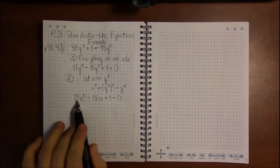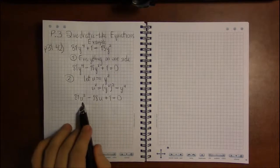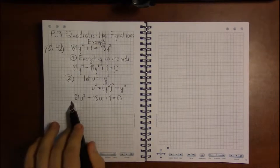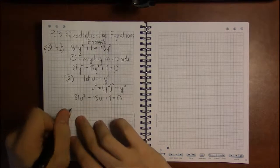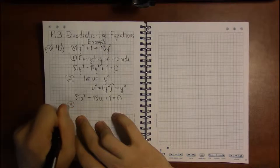Now I look and see, I've got numbers, I've got u squared, I've got u. This is nice and quadratic. So I'm going to solve the quadratic.